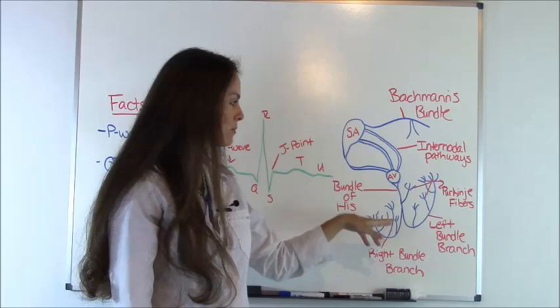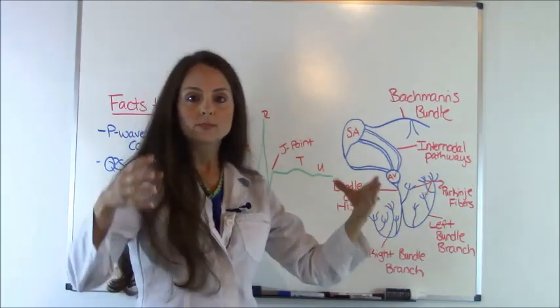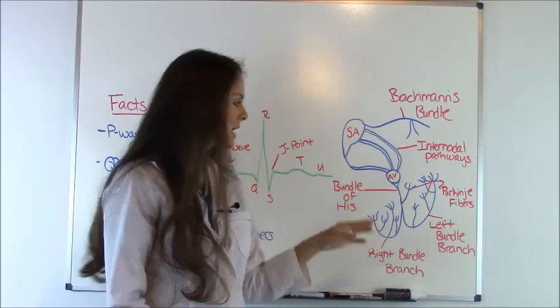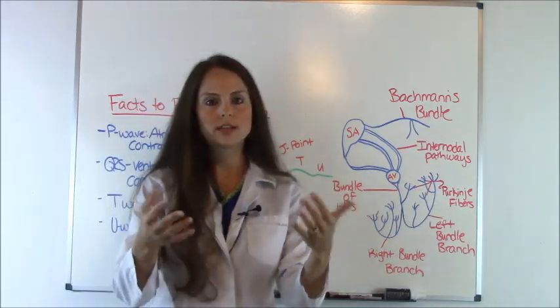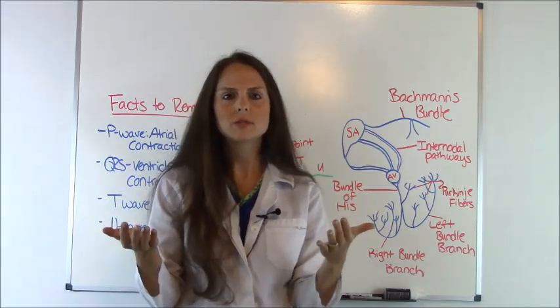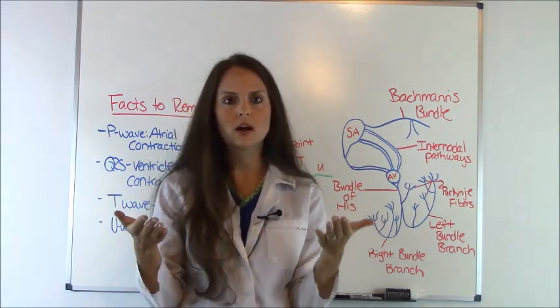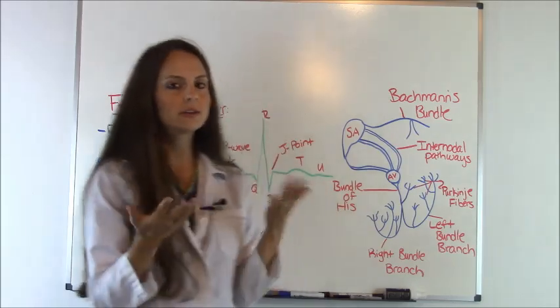And your Purkinje fibers, remember, you have your AV node, the bundle of His, and your bundle of His branches off to the right and left bundles. And then you have those Purkinje fibers. So whenever they're saying that the Purkinje fibers have already depolarized and they're resting, they're saying the U-Wave is being caused by that. And sometimes you'll see that in patients who have severe hypokalemia, which is a low potassium level. So you can see that.